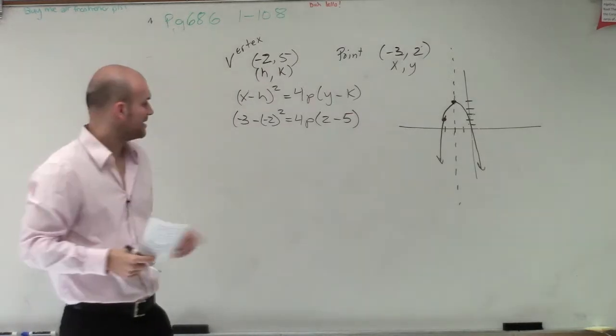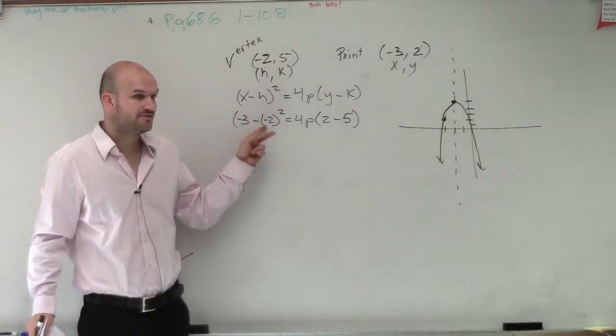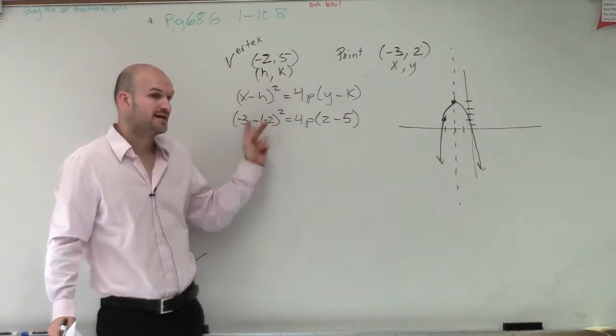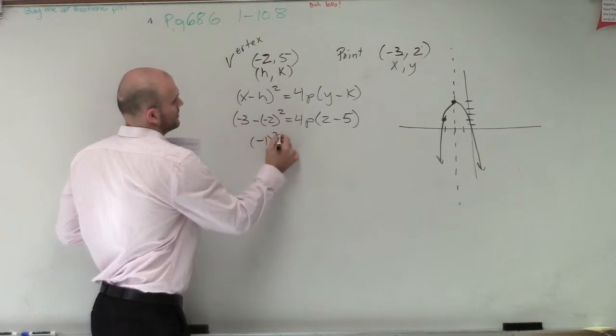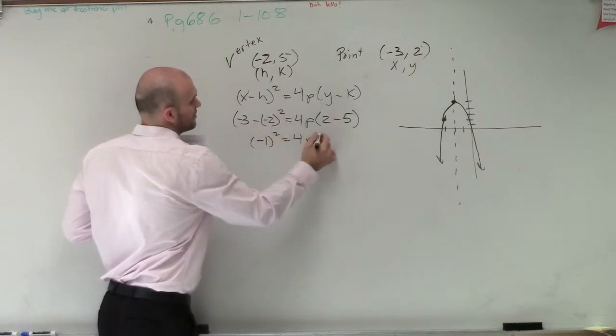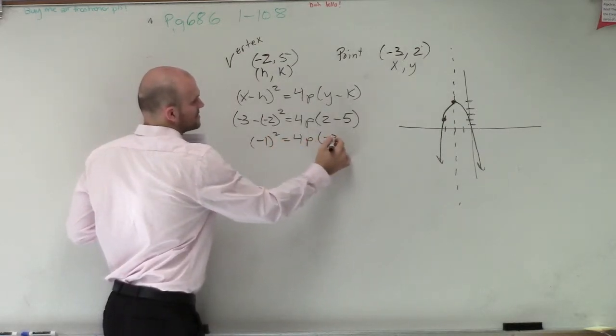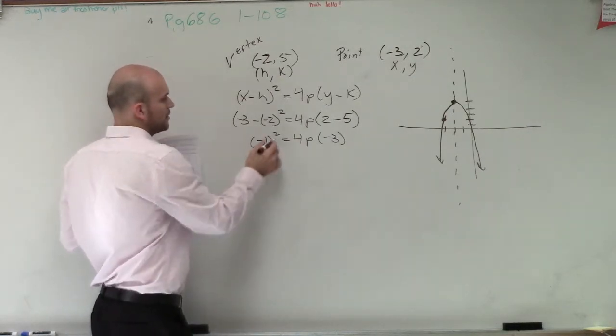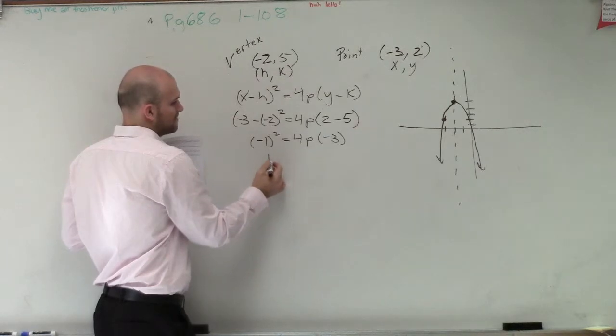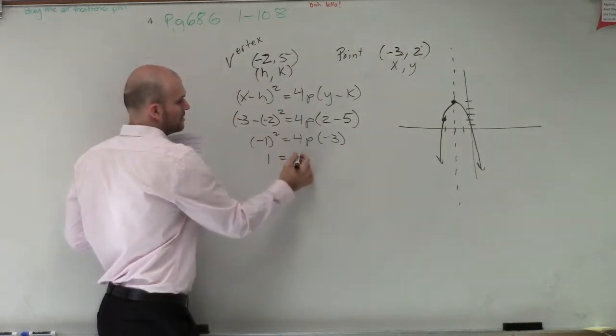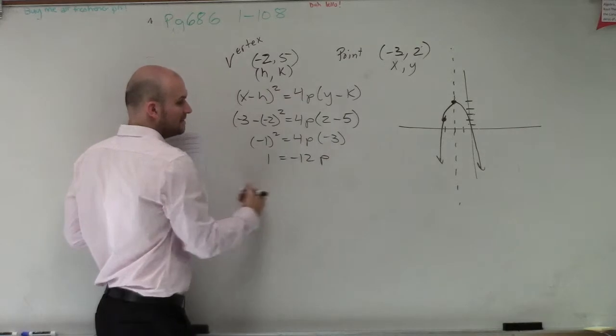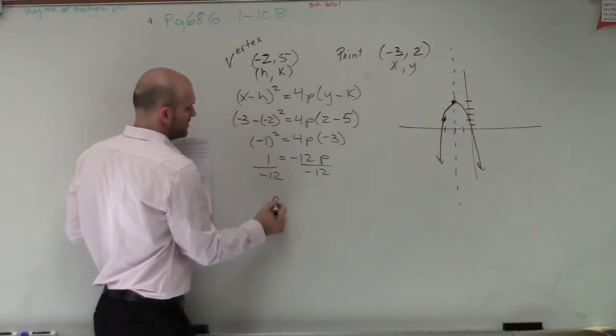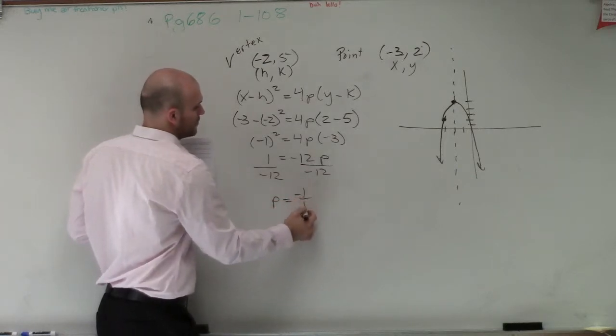So now let's go and simplify this. Negative 3, that becomes a double negative. Minus a negative is positive 2. Negative 3 plus positive 2 is negative 1 squared, equals 4p. And this becomes minus 3. So therefore, now we can square this, which becomes a positive 1, equals negative 12p divided by negative 12. Therefore, we get p equals negative 1 over 12.